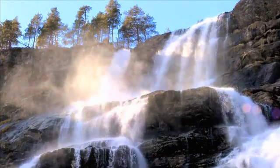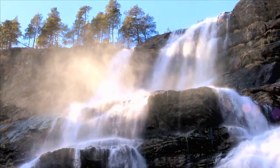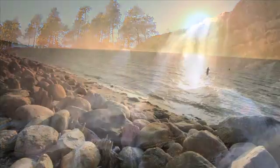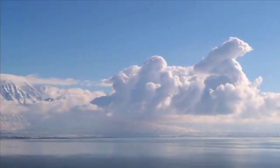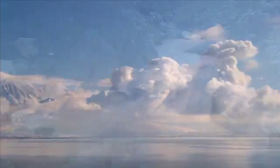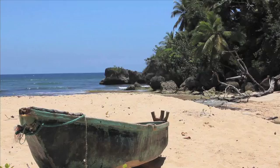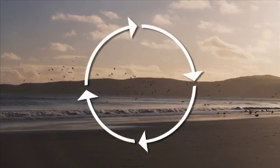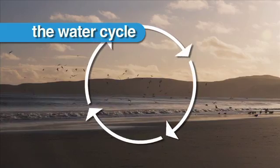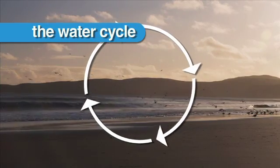Water on our planet Earth is always on the move. Water moves from the oceans, to the clouds, to the land and rivers, then back to the ocean. This process, called the water cycle, is repeated over and over again.